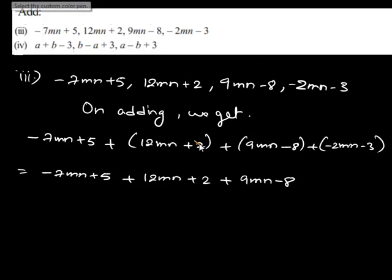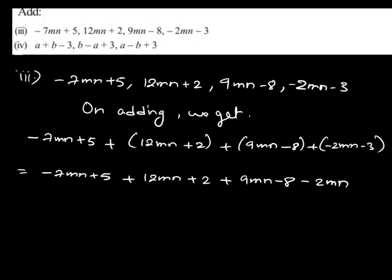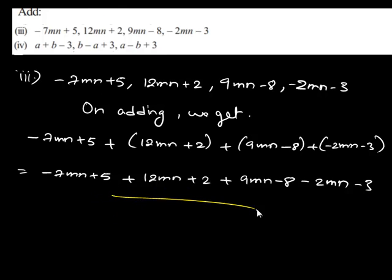So we get negative 2mn, and again positive times negative is again negative, so we get minus 3. So, we have to simplify this given expression. In order to simplify this, we have to combine the like terms together.